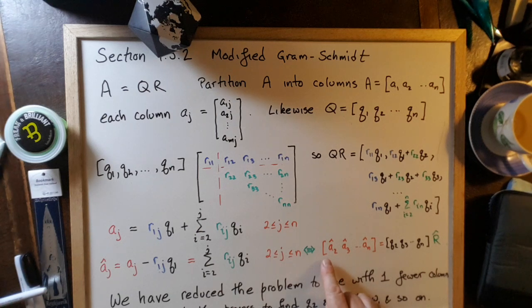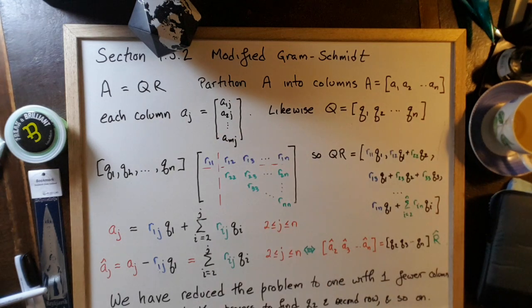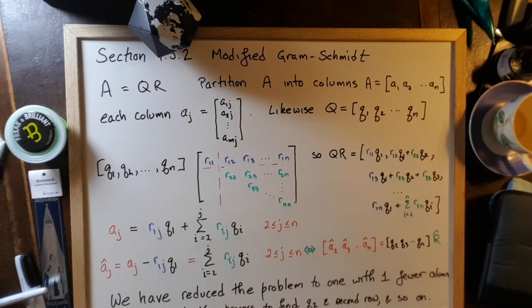The key thing is that this is exactly the same kind of equation as what we were originally solving, but now not with N columns, but with N minus 1 columns. Each column is still of size M. We have reduced the problem to a problem with one fewer column.